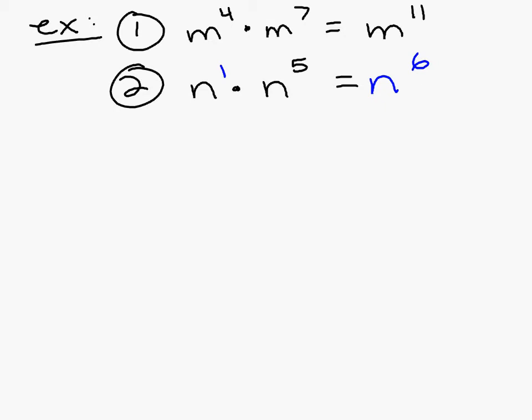Sometimes you might have three expressions like a to the seventh times a times a to the ninth. Well, you just add up all of them since aren't they all a like base? So seven plus one plus nine is going to be 17. a to the seventeenth power.